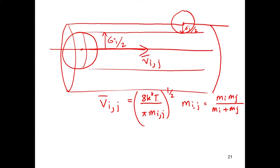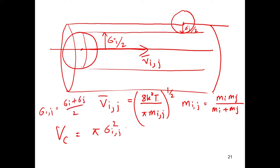Now, let us find the diameter of this collision volume. The diameter is given by sigma_i + sigma_j. The volume of this collision volume — the volume of the cylinder V_c — is given by π σ_ij², where σ_ij = (σ_i + σ_j)/2, times the mean relative velocity v̄_ij.